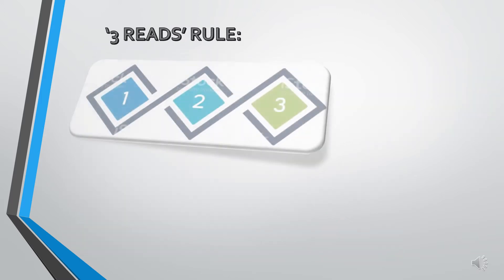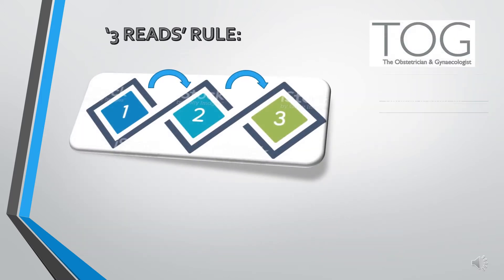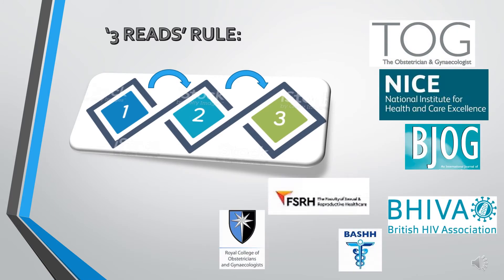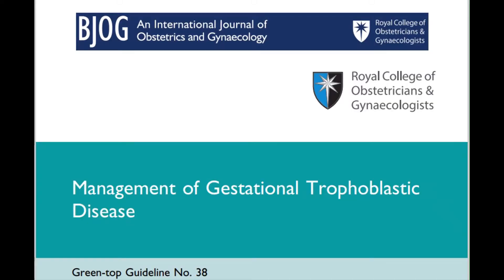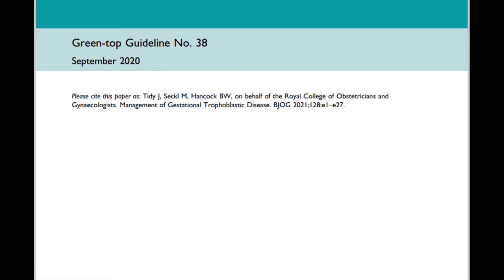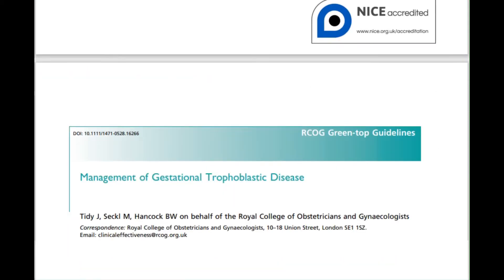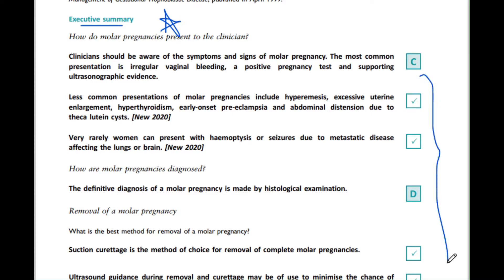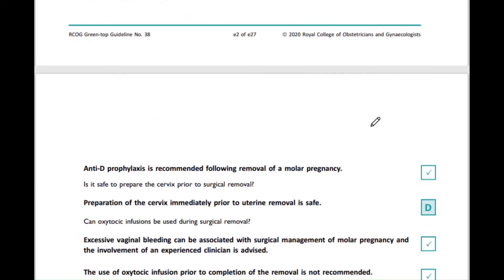Now follow the three reads rule for all the guidelines. Here is a short clip to demonstrate the three reads rule. But before that, let me show you a few subheadings of the guideline. The executive summary is mentioned in many guidelines and it's really important. You do not need to highlight the whole thing — unless you want to, you might need a big paintbrush.